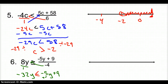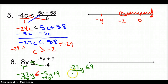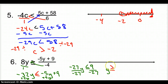Putting y's together, I add 5y to get negative 27y is less than or equal to 9. I added a positive 5, so I'm not flipping it — I didn't multiply or divide by a negative. Now dividing both sides by negative 27, the sign flips, and I get y is greater than or equal to negative 1/3.